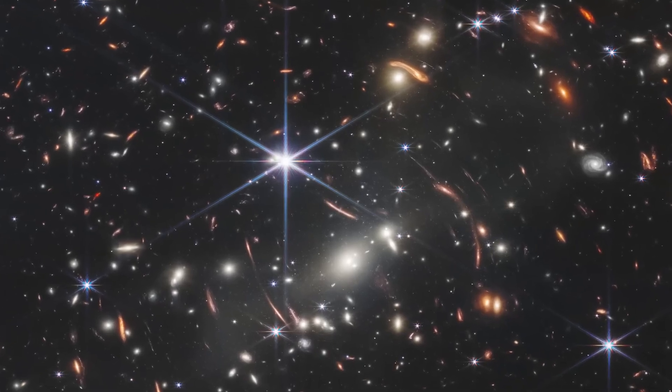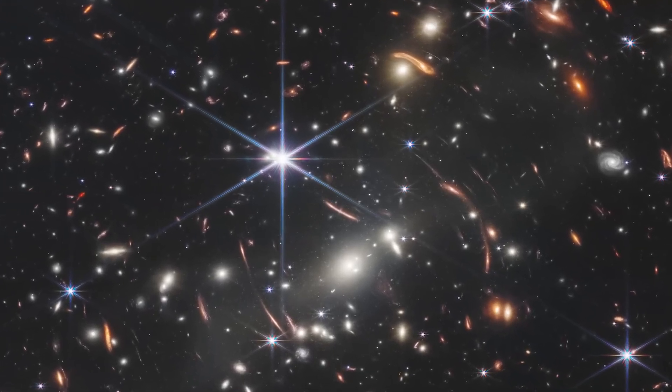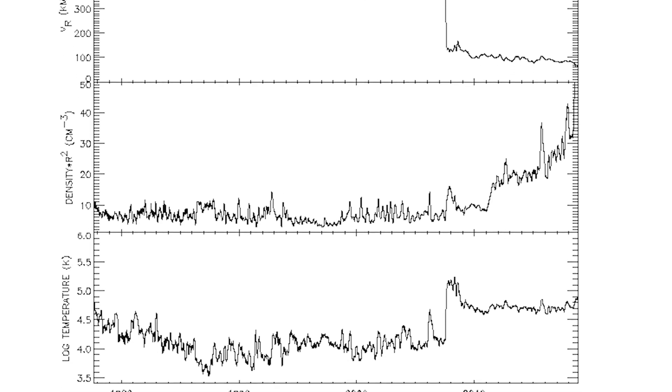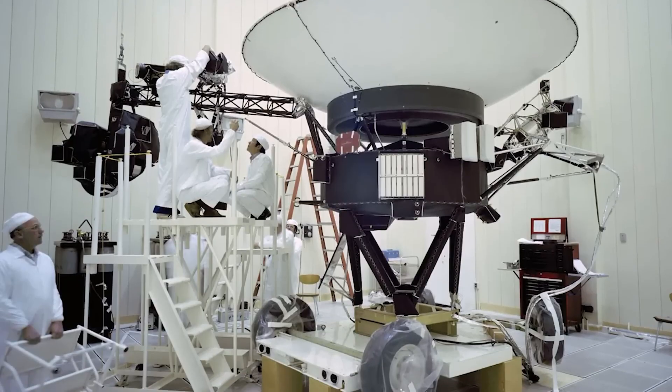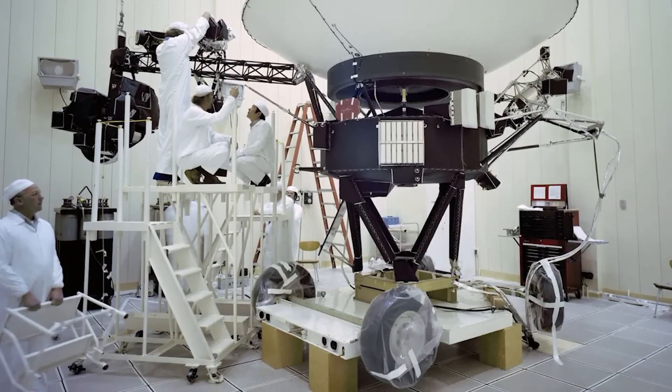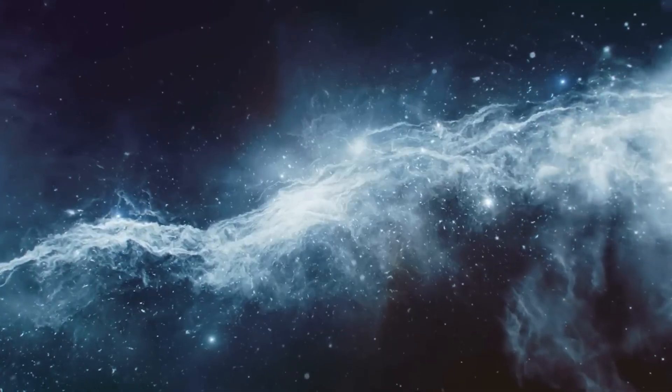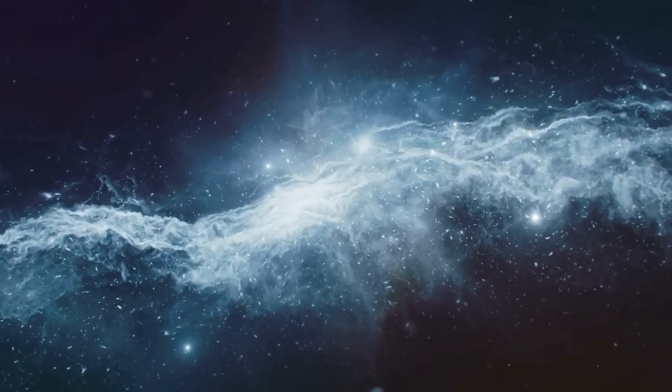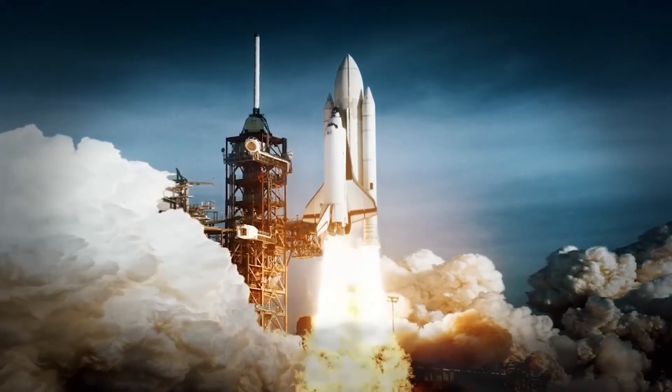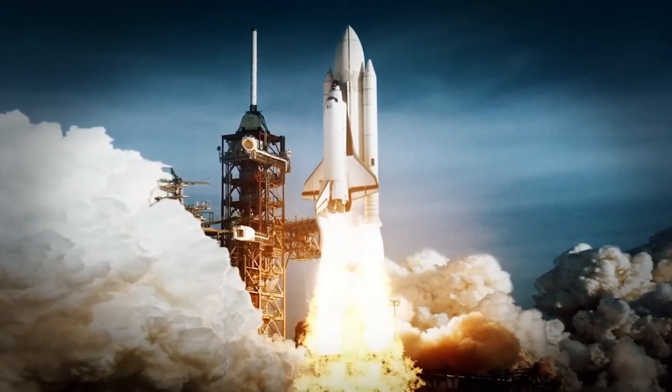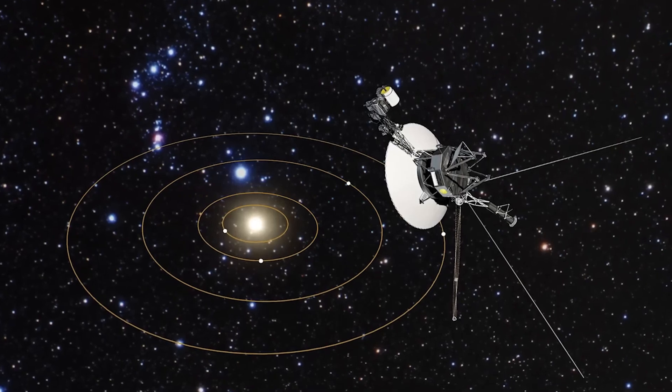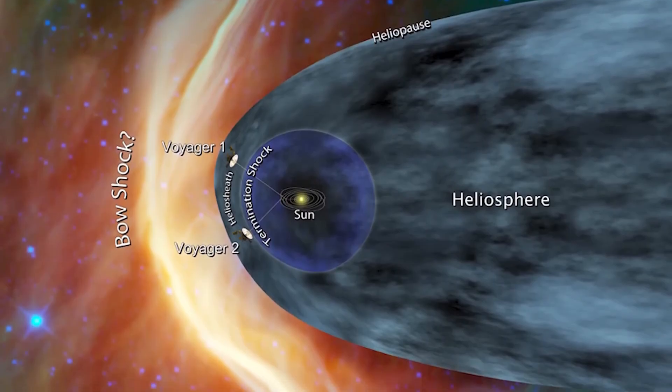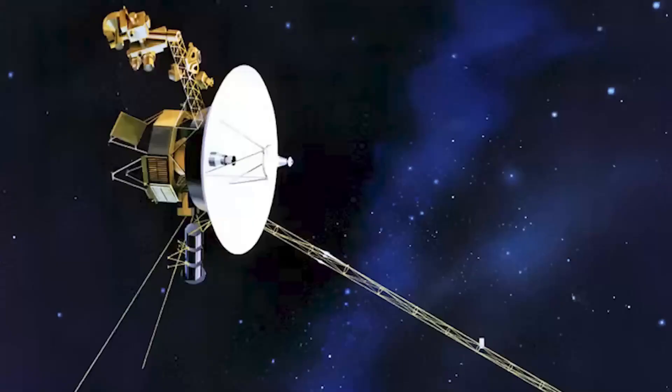Nevertheless, Voyager 2's impossible discovery has shifted our cosmic perspective. It reminds us that even after centuries of charting the heavens, we remain at the beginning of understanding the universe. The edge of the solar system, once thought to be a quiet and featureless horizon, now stands revealed as a dynamic, unpredictable realm filled with forces we barely comprehend. With every signal Voyager 2 sends home, humanity is forced to rethink its place, not just in the solar system, but in the galaxy beyond. And in that small window between the known and the unknown, wonder thrives.